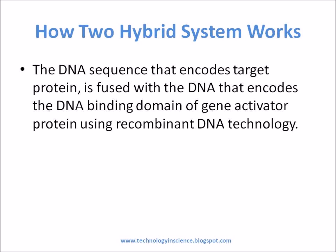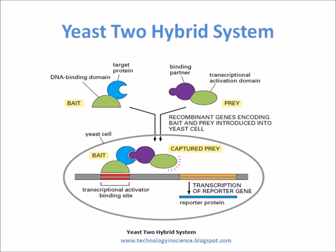Let's see how the Yeast-2 Hybrid System works. Even though it looks complex, the Yeast-2 Hybrid System is relatively simple to use in labs to study protein-protein interaction. As the protein-protein interaction occurs inside the yeast cell nucleus, proteins from every part of the cell and from any organism can be studied using the Yeast-2 Hybrid System.